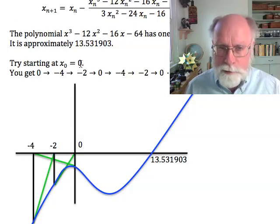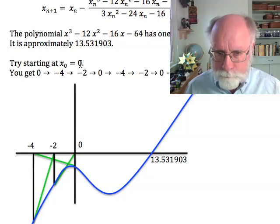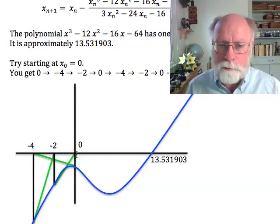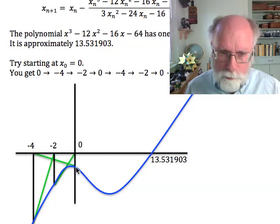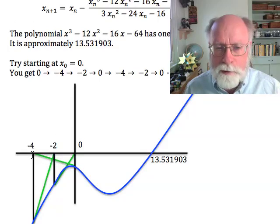If you start your iterations at 0, watch what happens. You start at 0, so you go to the function at 0, and so that's going to be minus 64. You follow the derivative, the tangent line, over to the x-axis, and it hits the x-axis at minus 4.